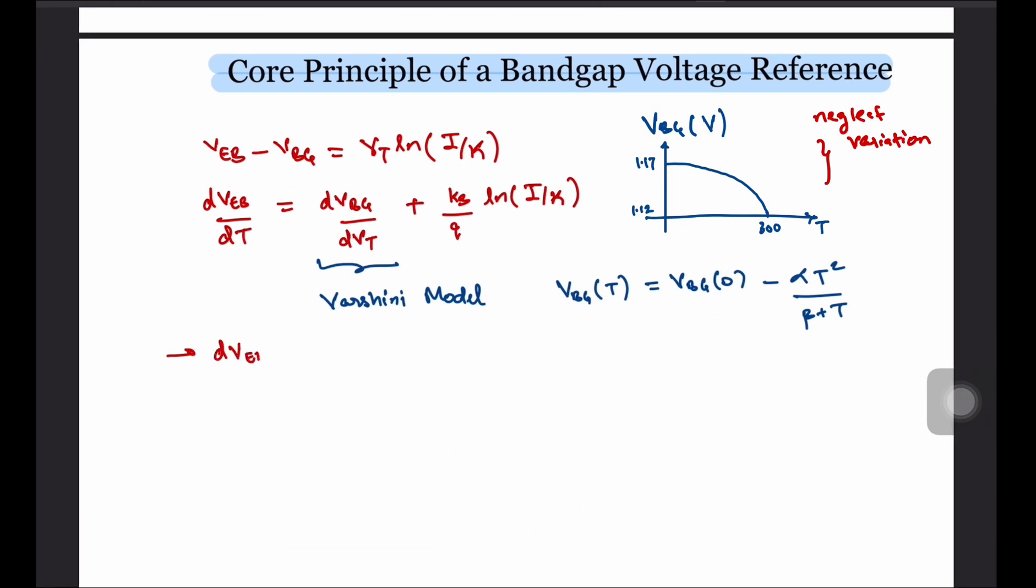Let's just ignore that for now, since it doesn't significantly change the underlying concept. Therefore, dVEB by DT equals to VEB minus VBG over T. Plugging in typical values of VEB and VBG, which is about 0.6 to 0.7 volts and 1.12 volts respectively, we can get a slope of about minus 1.6 millivolts per kelvin.